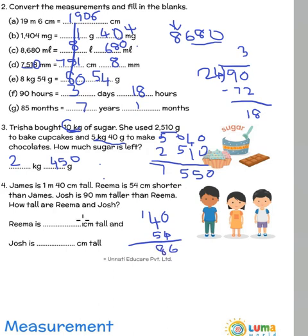Remember Josh is 90 millimeters taller than Rima. We are going to convert 90 millimeters. Remember it is millimeters and here we have it in centimeters. So 90 millimeters is 9 centimeters because 10 millimeters makes 1 centimeter. 86 plus 9 would make it 95. In all these measurements you must look at what is the unit which is given and be careful and convert it accordingly.